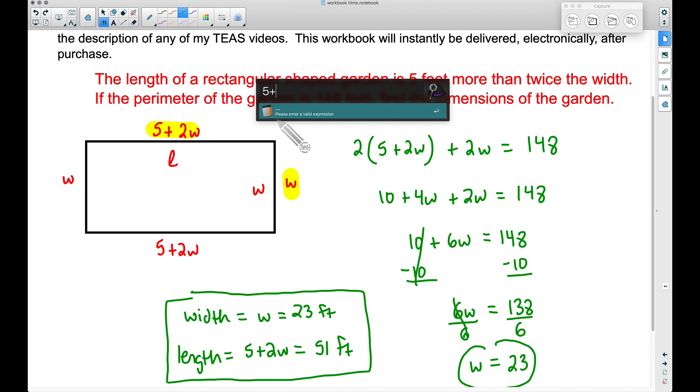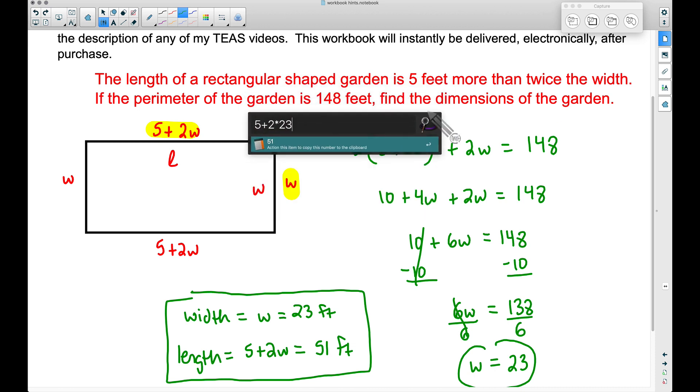Not only that, I want to make sure when I take 5 plus 2W, that's 5 plus 2 times 23. Notice we are satisfying that first sentence in our word problem. The length of 51 is 5 feet more than twice the width of 23. That works perfectly as well.